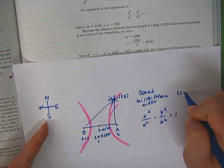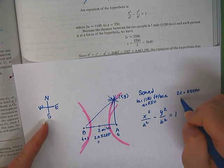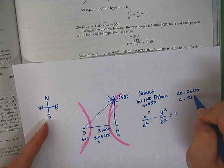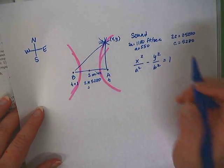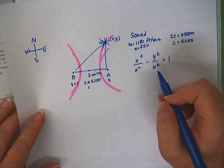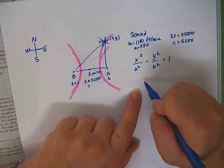Okay. Um, and then c is where the foci are located. So c, 2c would be 2 times 5280. So what would c be? 5280, correct?